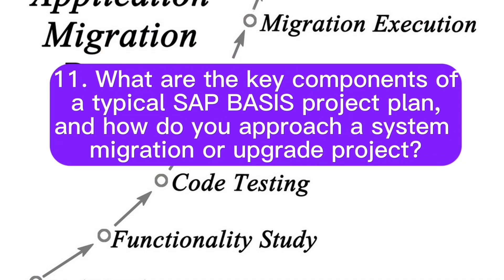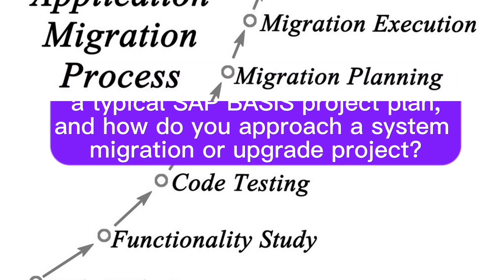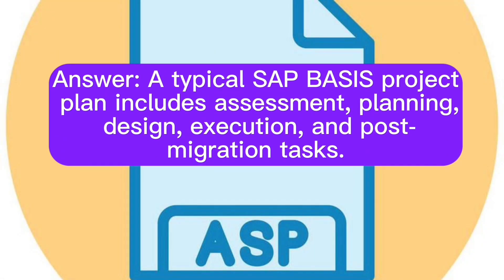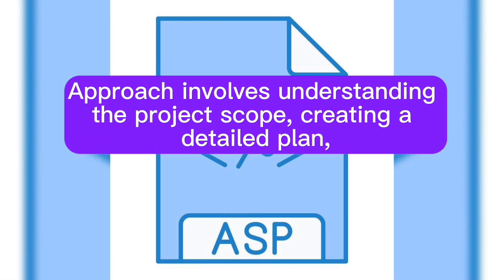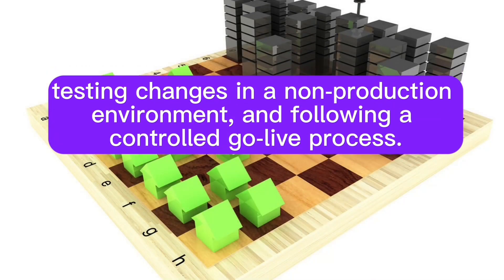Question 11: What are the key components of a typical SAP Basis project plan, and how do you approach a system migration or upgrade project? A typical SAP Basis project plan includes assessment, planning, design, execution, and post-migration tasks. The approach involves understanding the project scope, creating a detailed plan, testing changes in a non-production environment, and following a controlled go-live process.